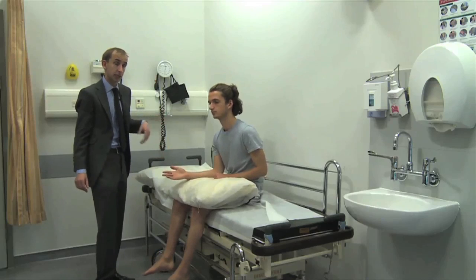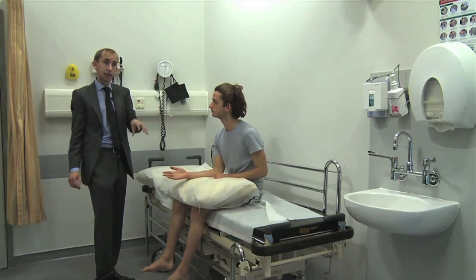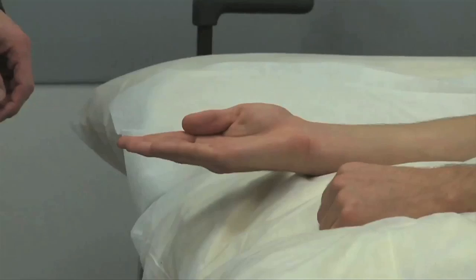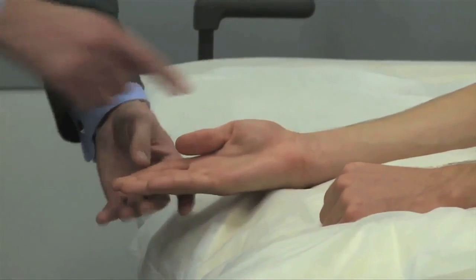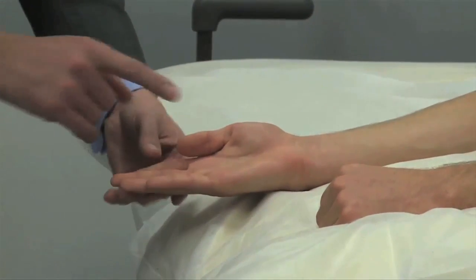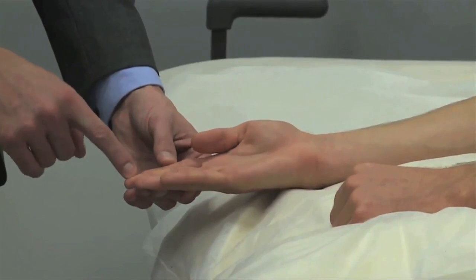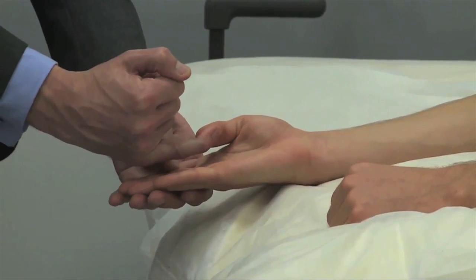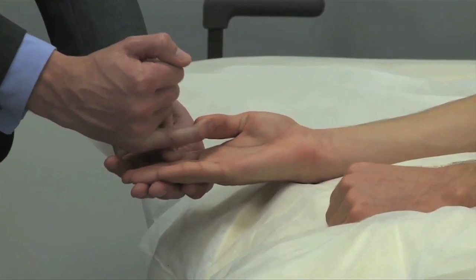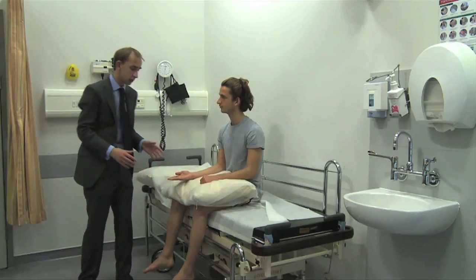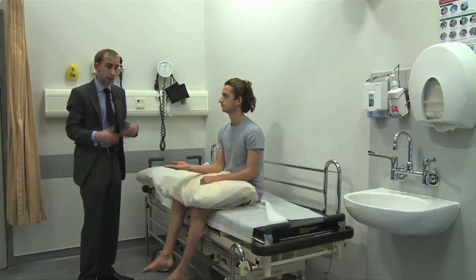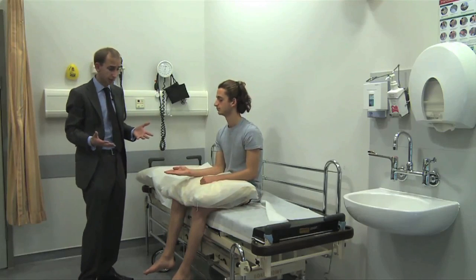So that's median nerve testing, motor and sensory, and they really should be taken together. From the ulnar nerve perspective, we can do a cheat's way, and again, using the thumb, we can say, if you could bring your thumb into the third finger here, that's adductor pollicis, and that's a quick way of doing it. But the ulnar nerve also supplies the interossei. In fact, it supplies most of the small muscles of the hand.